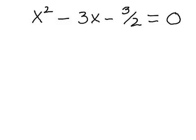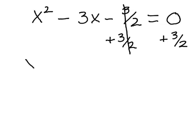the easiest thing to do is to move what's here to the other side by adding 3 over 2 to both sides, and then just putting in a new number that actually does work for us. So here you'll notice my 3 over 2s cancel out, and I get x² - 3x is equal to 3 over 2.